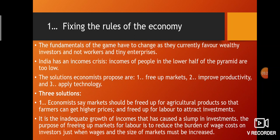Number one: free up markets. Economists say markets should be freed up for agricultural products so that farmers can get higher prices. The government has been trying to do this through the farm bills. But the question remains whether it has affected farmers' incomes. The MSP issue keeps coming up, with farmers in Haryana and Punjab fighting against government steps because they do not trust the government.